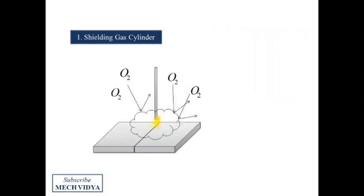They form a blanket of gases and prevent the weld pool from coming in contact with the atmosphere. For shielding, we generally use noble or inert gases such as argon, helium, hydrogen, etc.